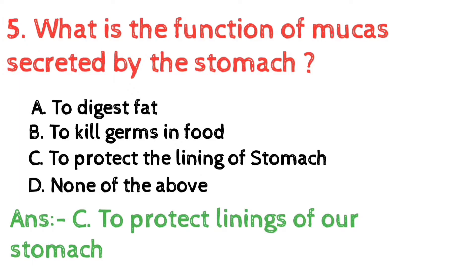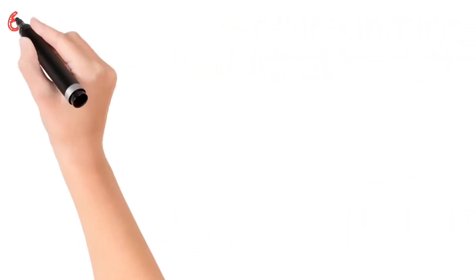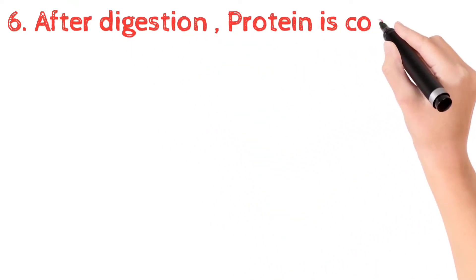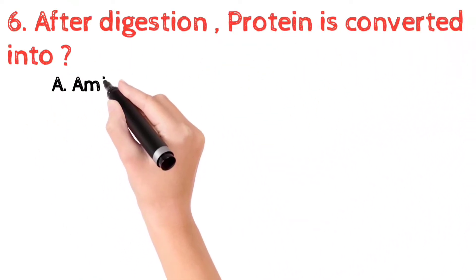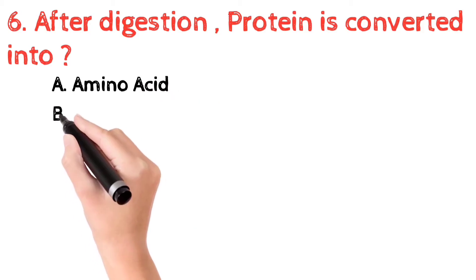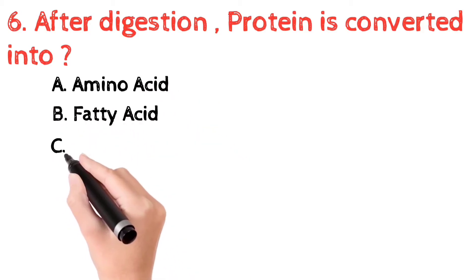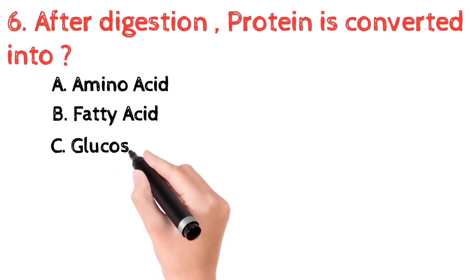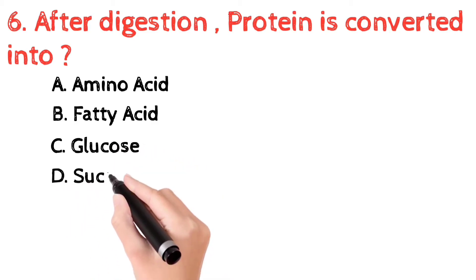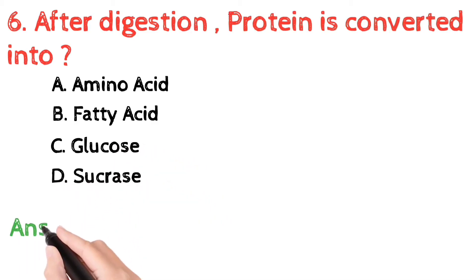The gastric mucus is a gel barrier secreted by epithelial cells and glandular cells in the stomach wall. Question number 6: after digestion, protein is converted into — a) amino acid, b) fatty acid, c) glucose, d) sucrose.